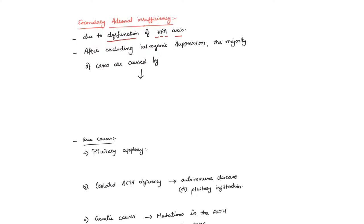After excluding iatrogenic suppression, the majority of cases are caused by pituitary or hypothalamic tumors like large pituitary adenoma, craniopharyngioma, meningioma, and ependymoma. All these tumors can cause pressure on the pituitary and hypothalamus, leading to decreased secretion of ACTH or CRH from these structures.